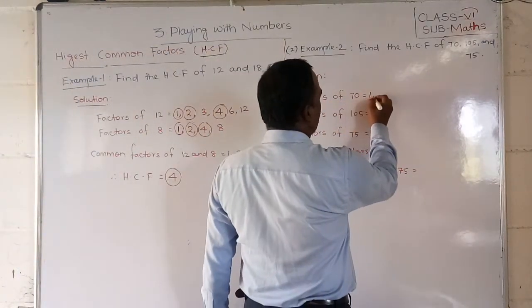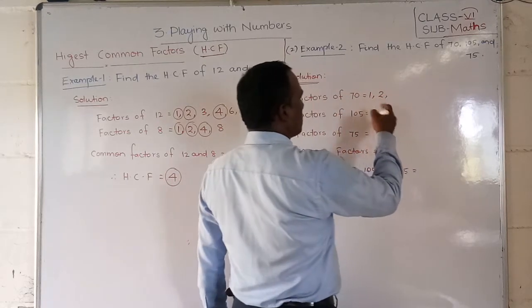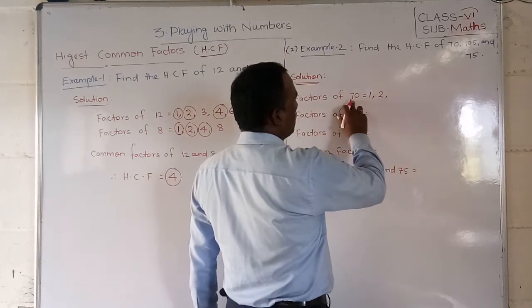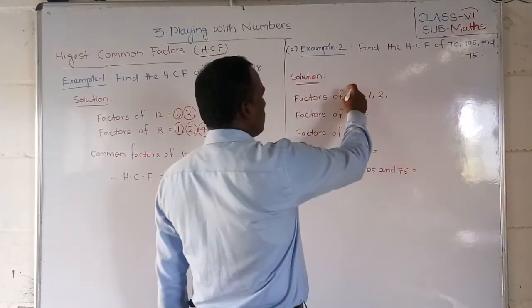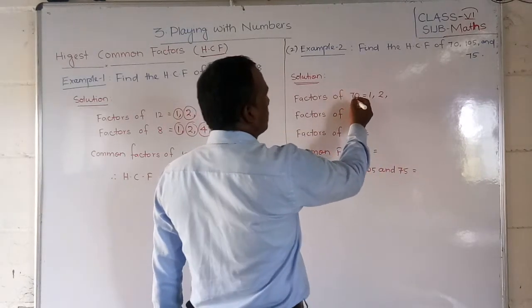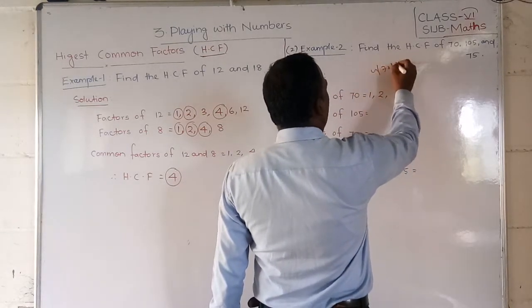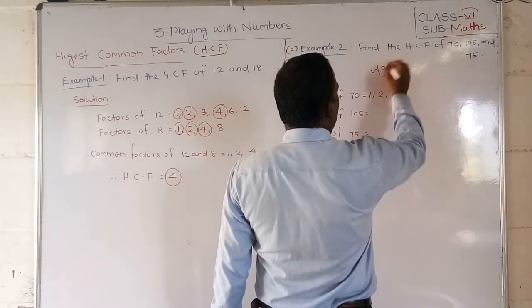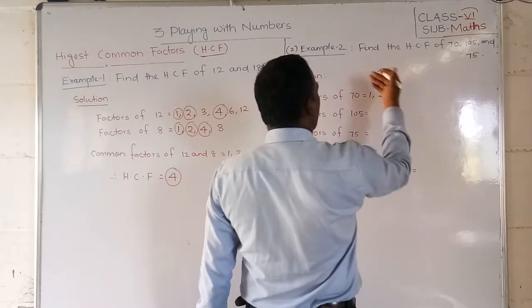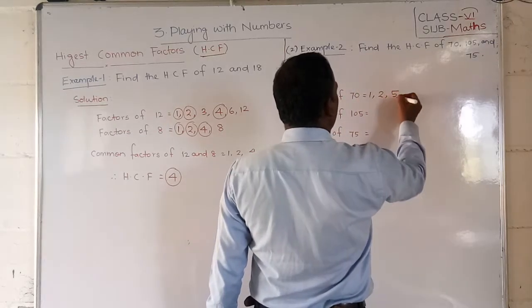So factors of 70. 1. 2 is divisible, so 2 times 35 is 70. So 3, we have to check. 3 is not possible. Check 4. 4 times 1 is 4. If 4 is divisible or not, we have to see. 4 times 1 is 4. It won't be. So 5, it will be divisible because 0 and 5 is divisible. So 5.